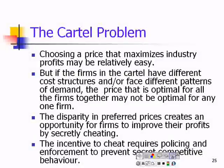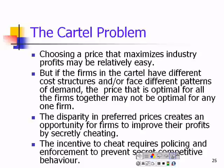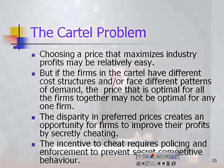But if the firms in the cartel have different cost structures or face different patterns of demand — for example, China has a very different pattern of demand than Canada or the United States. China is a very high-growth, fast-industrializing economy; India is another high-growth situation with big demand for oil. The United States is in recession, so demand for oil is fairly low because industrial processes are not at their peak.